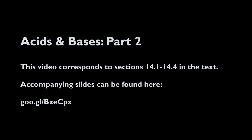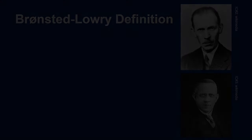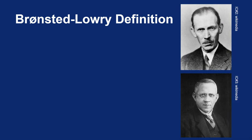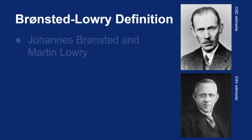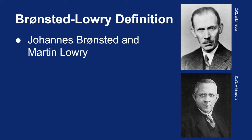In the previous video, we looked at the Arrhenius definition of acids and bases, but also highlighted some of the problems with Arrhenius' definition. These problems were remedied by Johannes Bronsted and Martin Lowry, who proposed their own definitions of acids and bases.